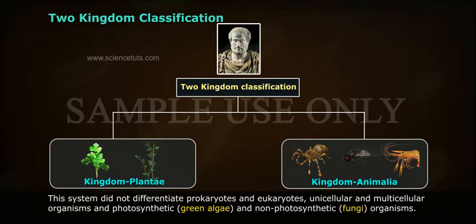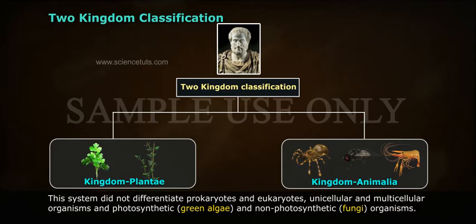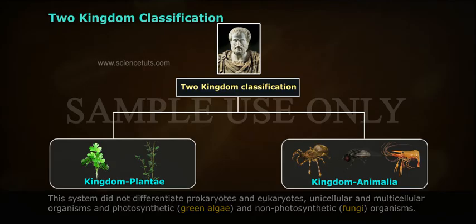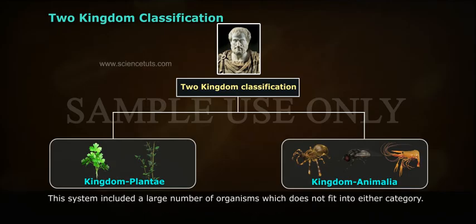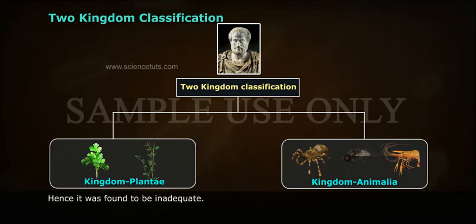This system did not differentiate prokaryotes and eukaryotes, unicellular and multicellular organisms, photosynthetic green algae, and non-photosynthetic fungi organisms. It included a large number of organisms which did not fit into either category, hence it was found to be inadequate.